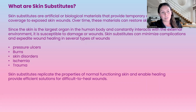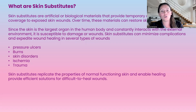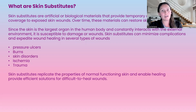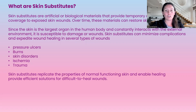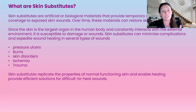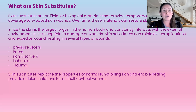So what are skin substitutes? Skin substitutes are either artificial or biological materials that provide either temporary or permanent cover to exposed wounds. Over time, these materials can restore the skin's function. Since skin is the largest organ in the human body, it consistently interacts with the external environment and is susceptible to damage and wounds. Skin substitutes can minimize complications and speed up wound healing.